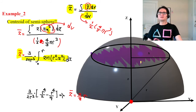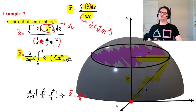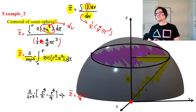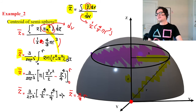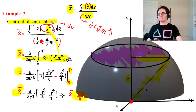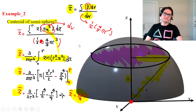Replacing x using the geometry — x squared equals r squared minus z squared — and performing the integration gives z-bar equal to (3 over 2pi r cubed) times [z squared r squared over 2 minus z to the power of 4 over 4] evaluated from 0 to r. Doing the math gives z-bar equal to 3 over 8 times r for a semi-sphere.